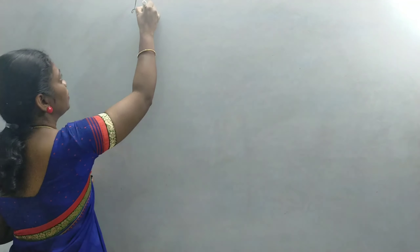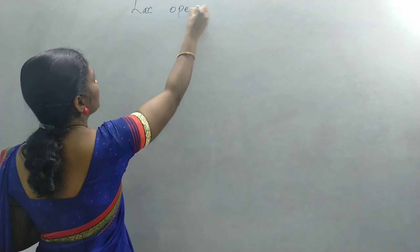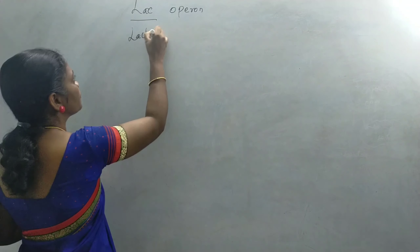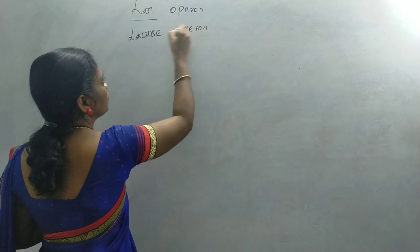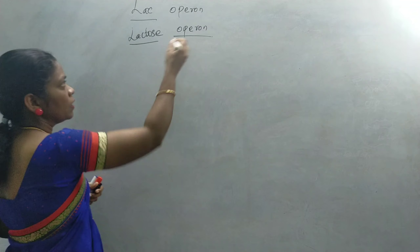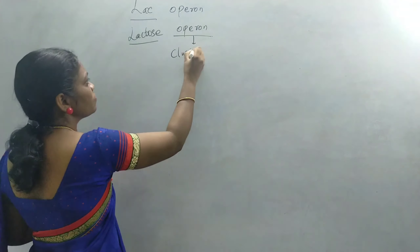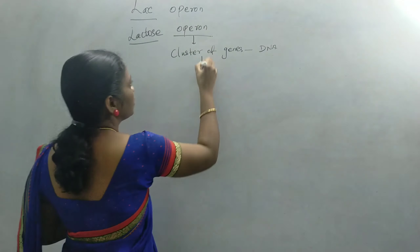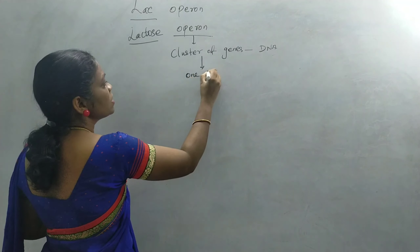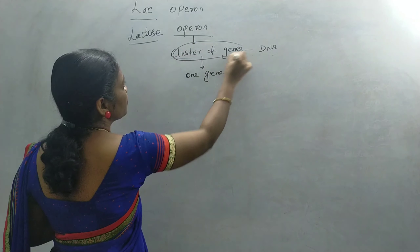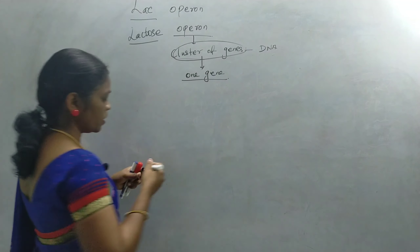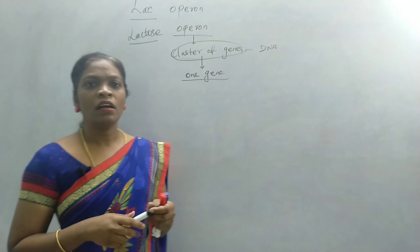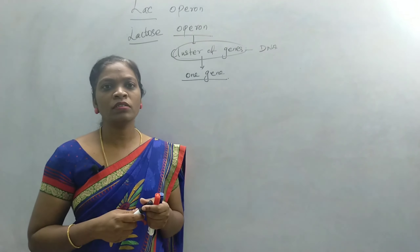Welcome to Catherine's tutorial. In this video, we will learn about the lac operon concept. Lac operon is also known as lactose operon. An operon is a cluster of genes in DNA which will be under the control of one gene. In other words, a group of genes with related functions together are known as an operon.